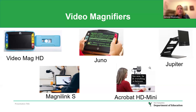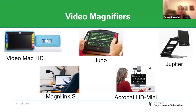Video magnifiers include the Video Mag HD, the Juno, and the Jupiter — all available through the American Printing House for the Blind with federal quota funds. The Video Mag HD is a handheld video magnifier. The Juno has near and distance cameras with adjustable contrast and colors. The Jupiter is larger with a more powerful distance camera for both near and distance viewing. The MagnaLink S and Acrobat HD Mini are available for loan through AT&NH and can be trialed with a student or family.